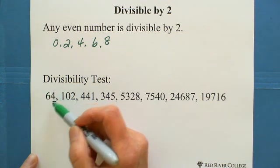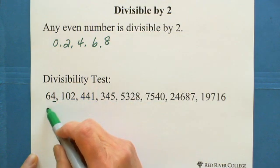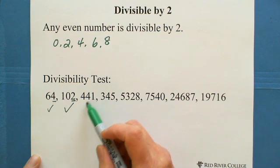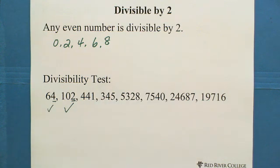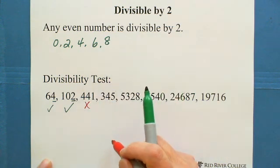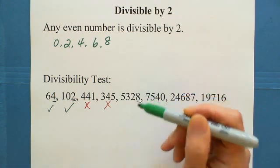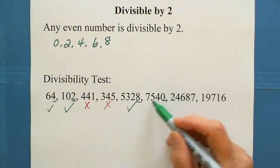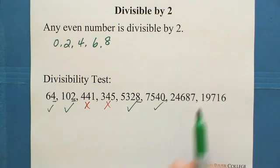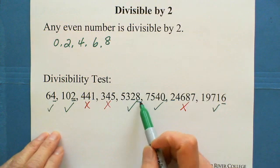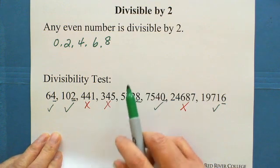64 — the last digit is 4, so this is an even number, it's divisible by 2. 441 is not even; it's an odd number, so it's not divisible by 2. 45 is also not even, so it's not divisible by 2. 8 is even, so it's divisible by 2. 0 as the last digit makes a number even and divisible by 2. 7 is not even, so it's not divisible by 2. 6 is even, so it's divisible by 2. Whatever the rest of the digits, you only need to look at the last digit — if it's even, it's divisible by 2.